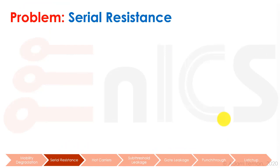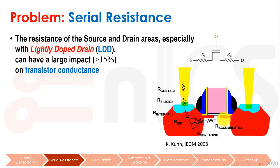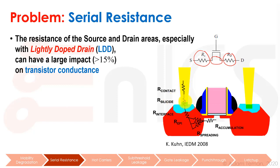That was our first category — mobility degradation. Now let's go to the second one: serial resistance. The source and drain areas have some resistance. We always look at the channel, but getting to the channel and away from it — the source resistance and drain resistance — they're really not negligible. They can have a large impact, 15% or even more, on the transistor conductance. There are many parts to this resistance: contact resistance, silicide resistance, interface between silicide and semiconductor, resistance inside the semiconductor, and the lightly doped drain resistance.